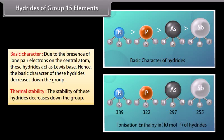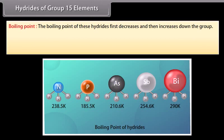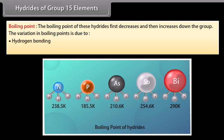Thermal stability: The stability of these hydrides decreases down the group, which can be explained in terms of bond dissociation enthalpy, which also decreases down the group. Boiling point: The boiling point of these hydrides first decreases and then increases down the group. This variation is due to hydrogen bonding and Van der Waals forces of attraction.